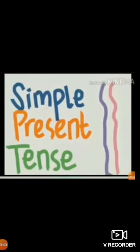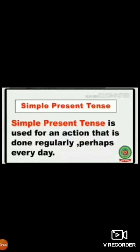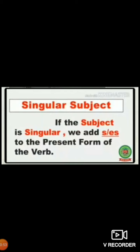Today we are going to discuss simple present tense. Simple present tense is used for an action that is done regularly, perhaps every day in present time. If the subject is singular, we add S or ES to the present form of the verb — for example, third person singular: he, she, it.